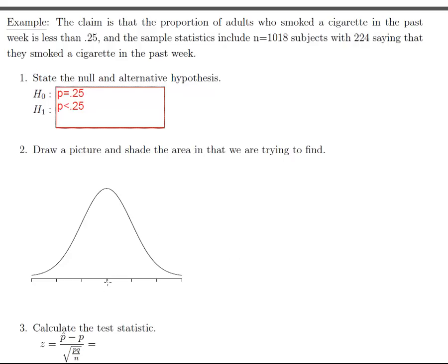Alright, and so we can still draw a picture for these problems. This would be 0.25 and then we want to calculate our sample proportion, so that's going to be p-hat and that's going to equal 224 divided by 1,018. And that's equal to 0.220. Okay, so 0.220 is over here somewhere and then because I have less than in the alternative, I'm interested in the area less than 0.220, so I'm interested in this area right here.